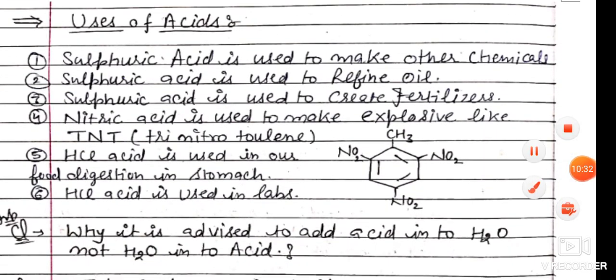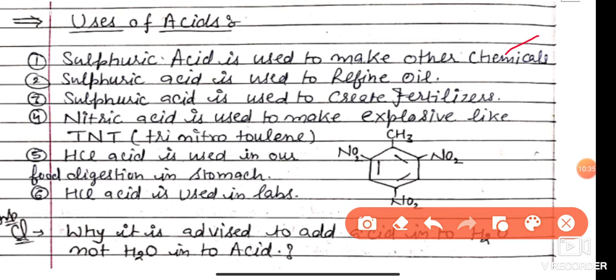Next are the uses of acids. Sulfuric acid is used to make other chemicals in industry, to refine oils, and to create fertilizers. Nitric acid is used to make explosives like TNT (Trinitrotoluene). Hydrochloric acid is used for digestion in our stomach and is also used in labs.